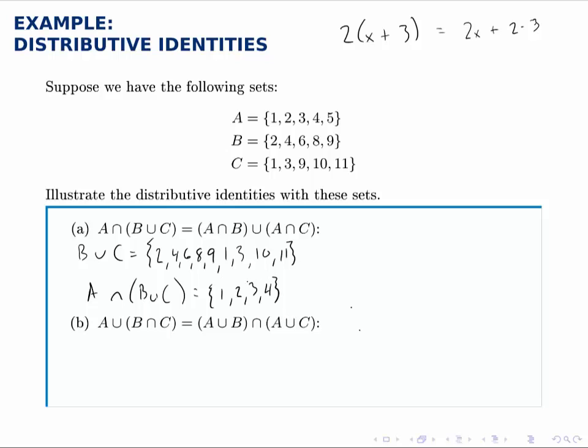So we get the answer {1, 2, 3, 4} for the left-hand set in this equality. So we'll do the right-hand set now and make sure that we get the same answer: 1, 2, 3, 4. A intersect B: we look for what elements are in A and in B, and that would be 2 and 4. A intersect C: all the elements that are in A and in C, and that's 1 and 3.